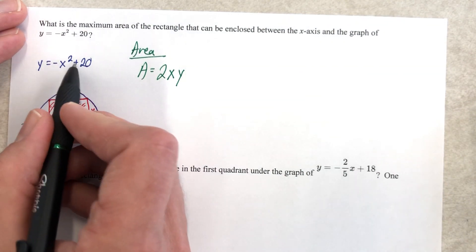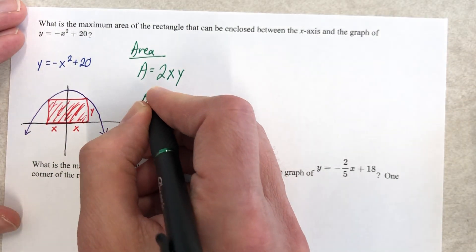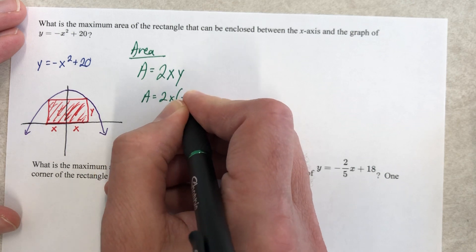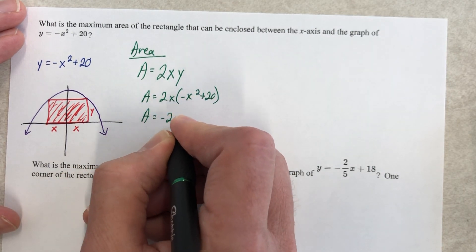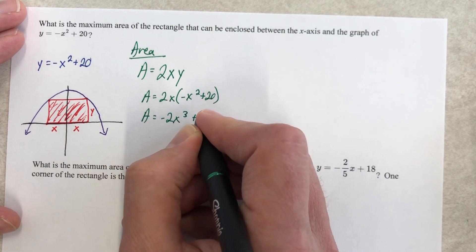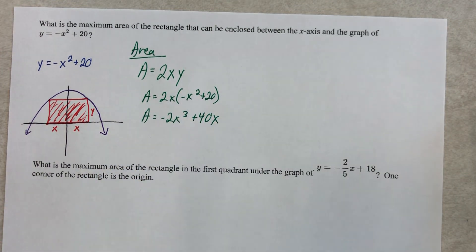So the next step is to take what we know, plug it in. So a equals 2x times negative x squared plus 20. And a equals negative 2x cubed plus 40x. There we go.